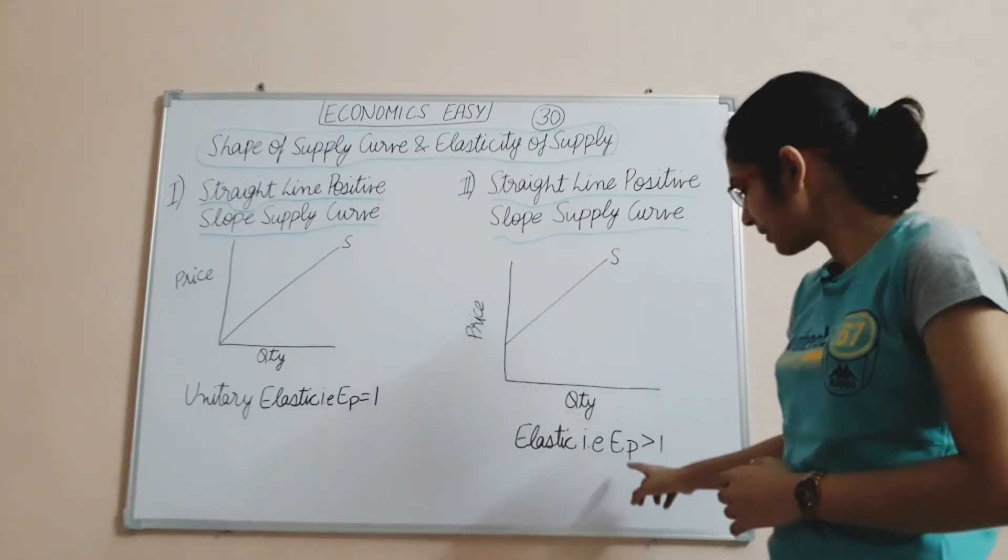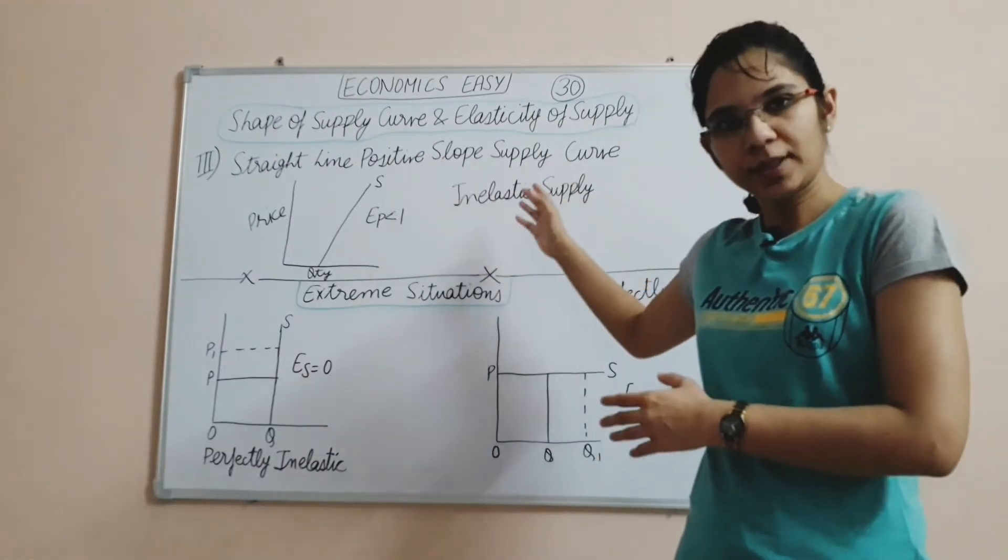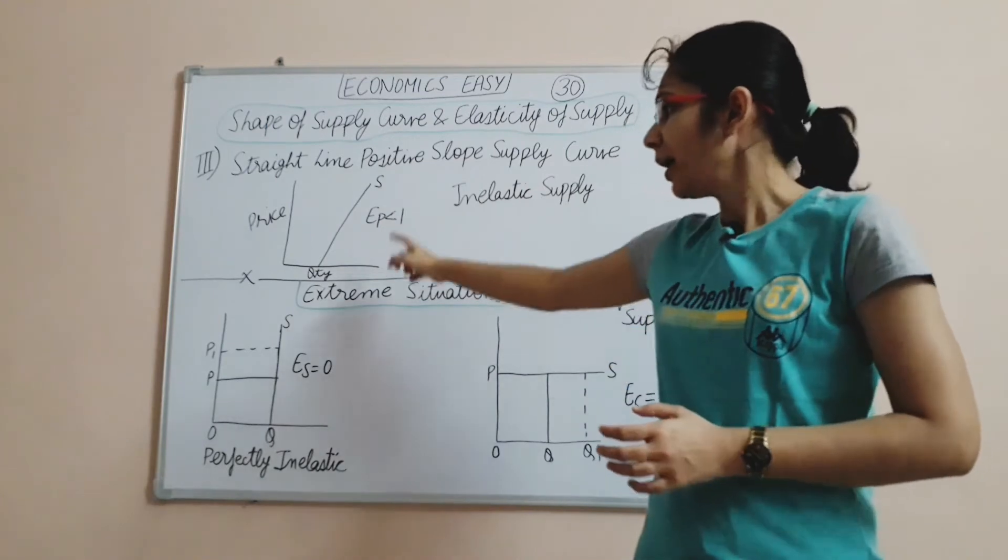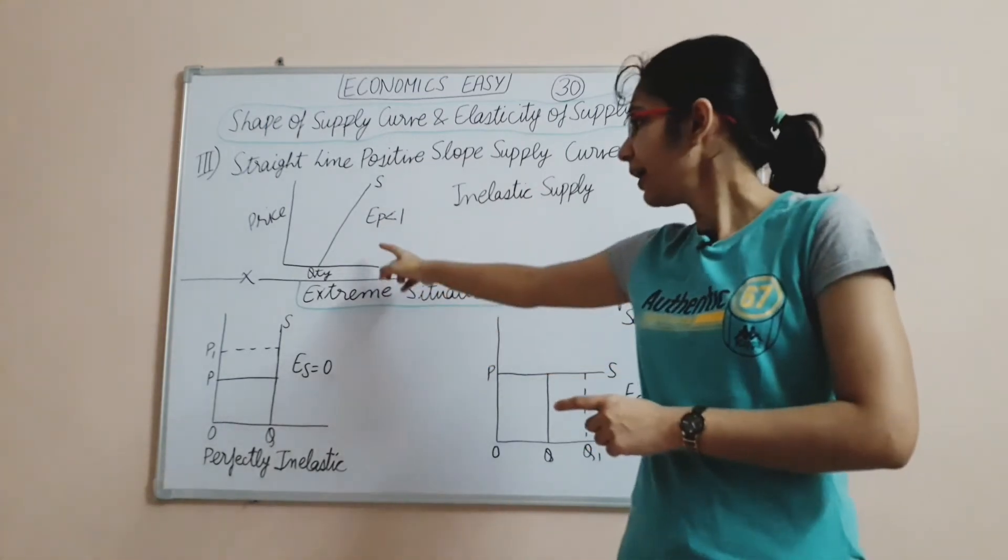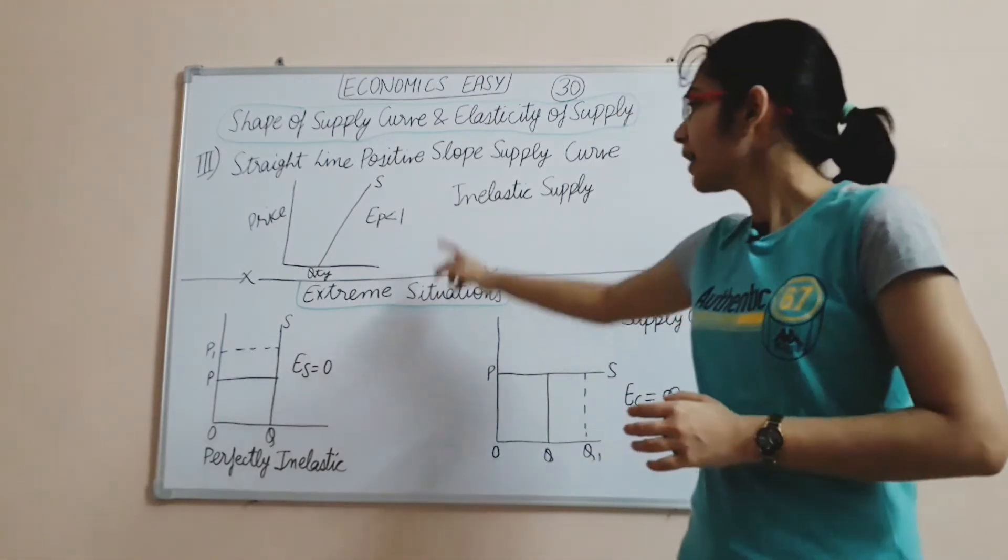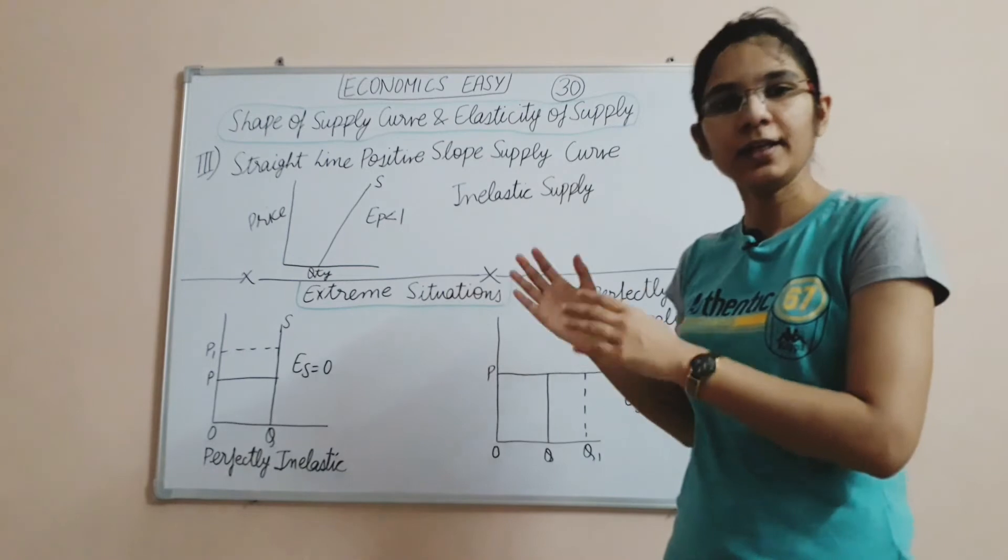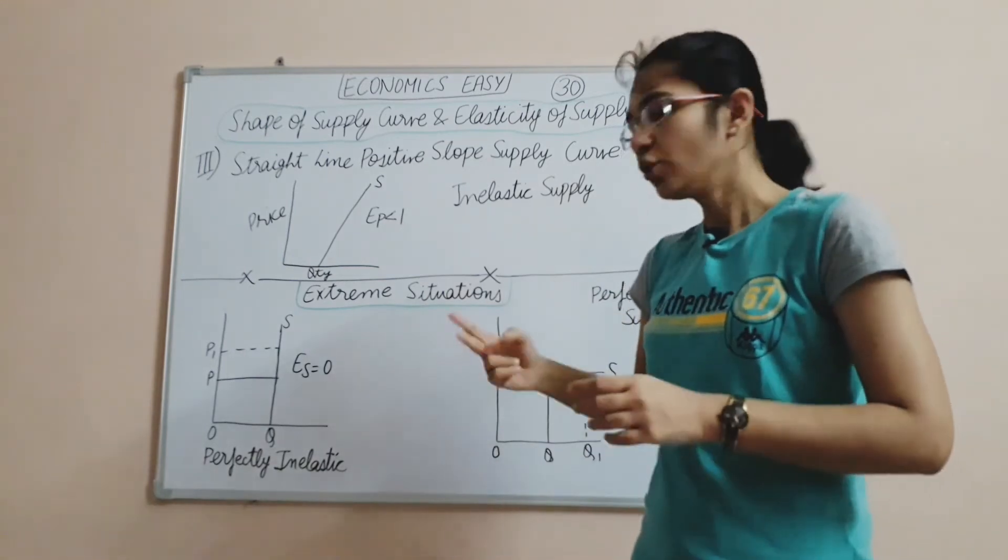If the supply curve originates from the origin, then price elasticity equals one, called unit elastic. Second, if the straight line positive slope supply curve starts from the Y axis, then price elasticity is greater than one, called elastic supply. Third, if the supply curve starts from the X axis, then elasticity of supply will be less than one, and we call it inelastic supply curve.